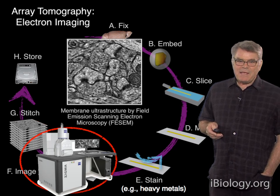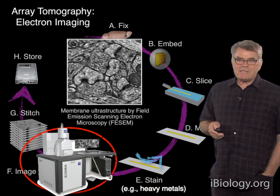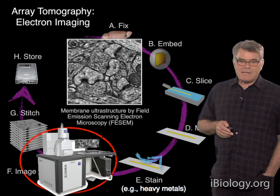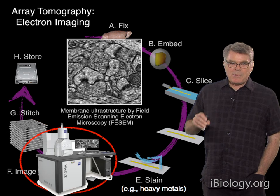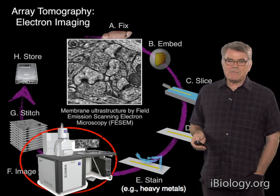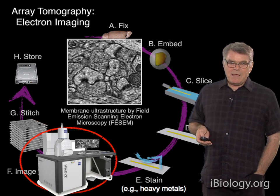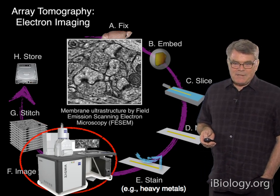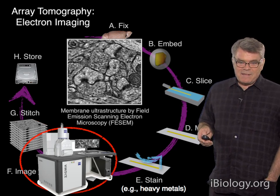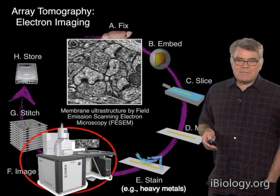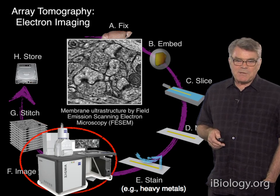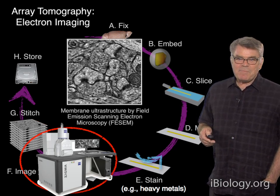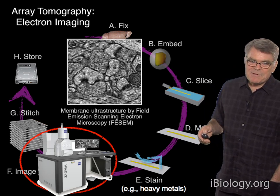Last but not least, a unique feature is that after fluorescence imaging, it's possible to restain the specimen for electron microscopy and to image it with a field emission scanning electron microscope, which allows for perfectly correlated, conjugate electron microscopic images to go along with the proteomic fluorescence images. Scanning electron microscope images of array sections look very much like traditional transmission electron microscopes of ultra-thin sections that you may be used to from many other areas of cell biology.